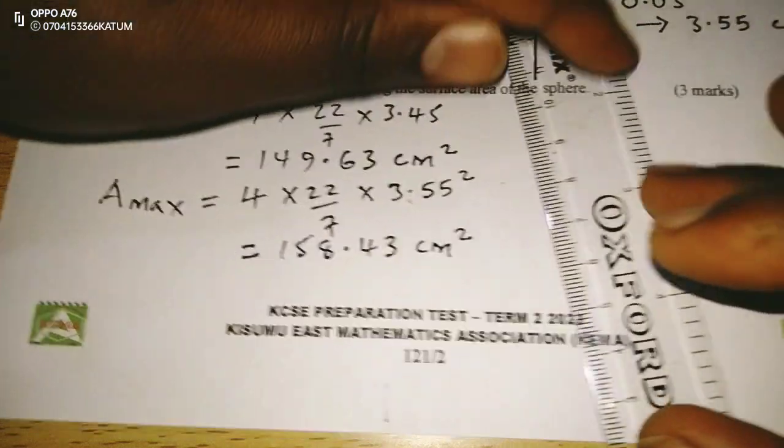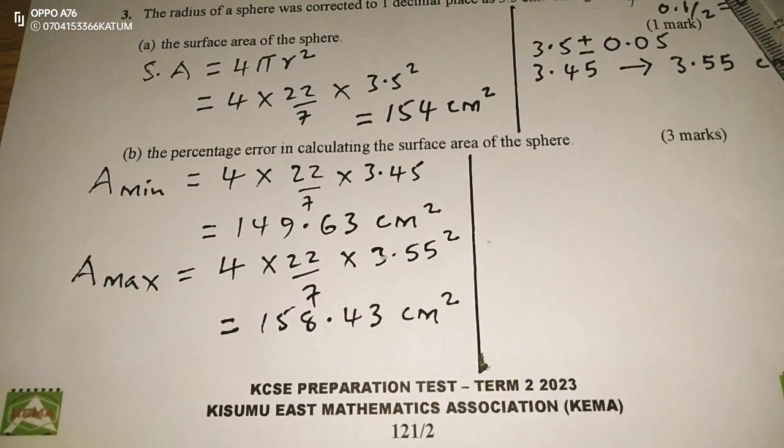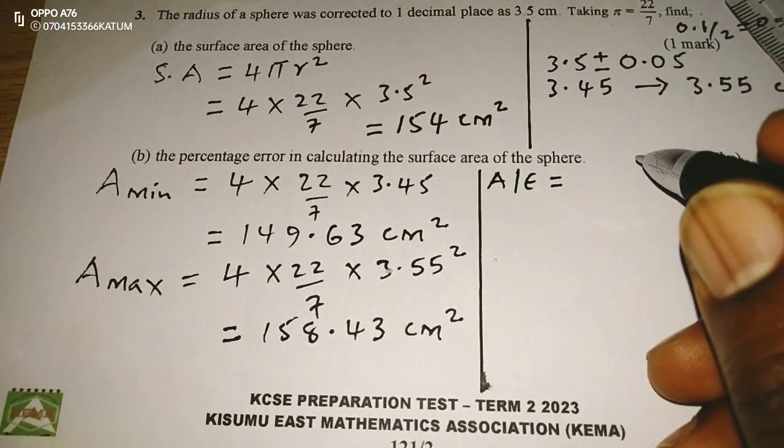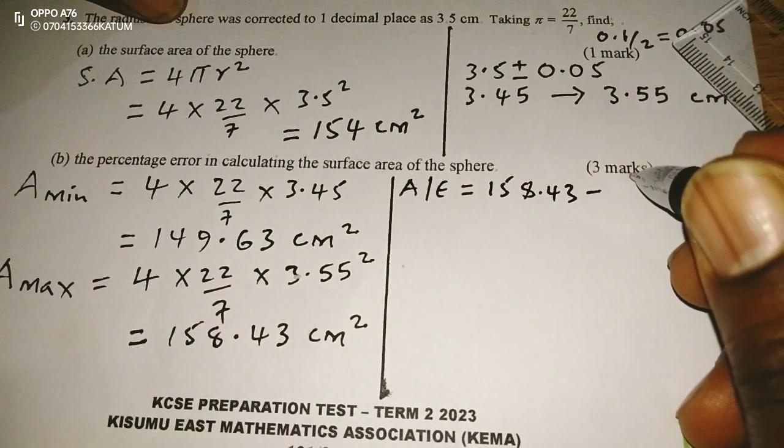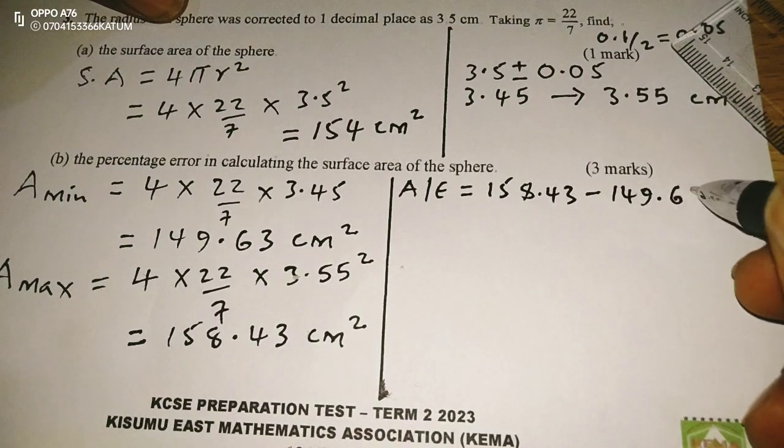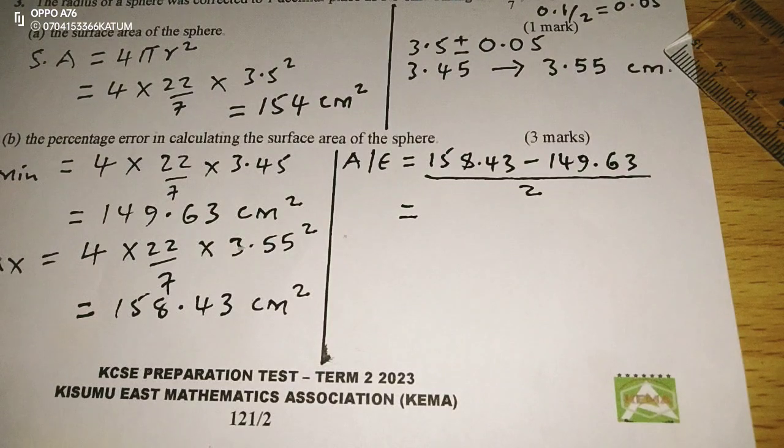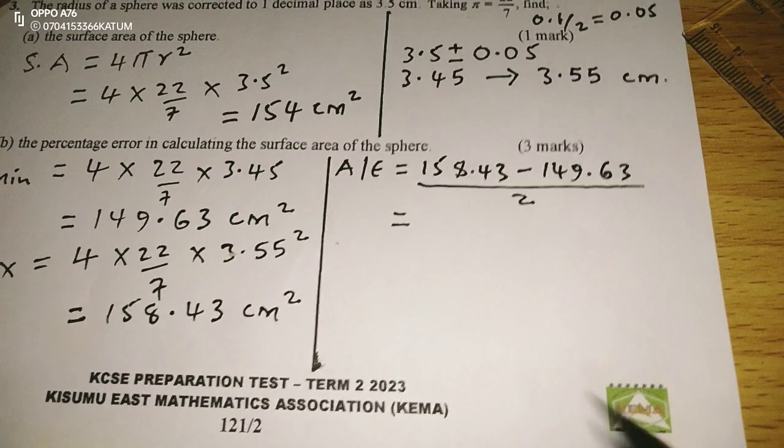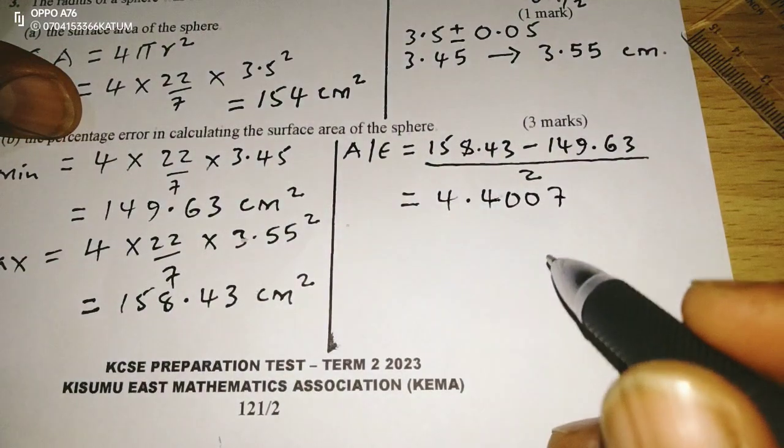So with maximum area and minimum area, we need to get now what we call absolute error in the computation of the area. And absolute error is usually calculated by area maximum, which is 158.43 minus area minimum, 149.63 divided by 2. So this is going to give us, when we subtract 149.63 from 158.43, then we divide by 2, we're going to have 4.4007. This is at 4 decimal places squared.